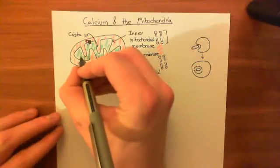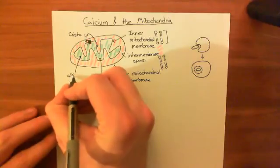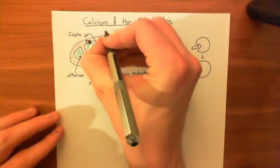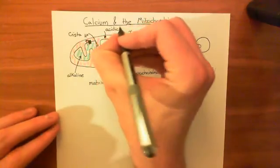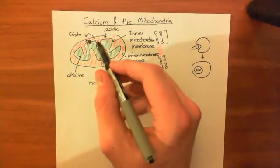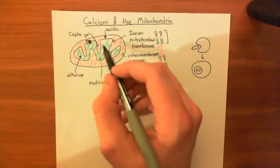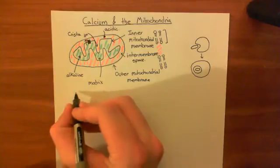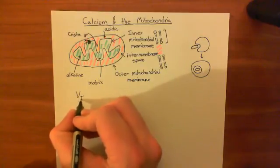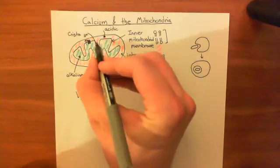That means the matrix becomes alkaline — the proton concentration is low — so its pH goes higher than 7. And the pH of the intermembrane space becomes acidic because you are adding protons in there. Also, protons have a positive charge. So you are moving positive charge from the matrix into the intermembrane space, making the intermembrane space positive and the matrix negative.